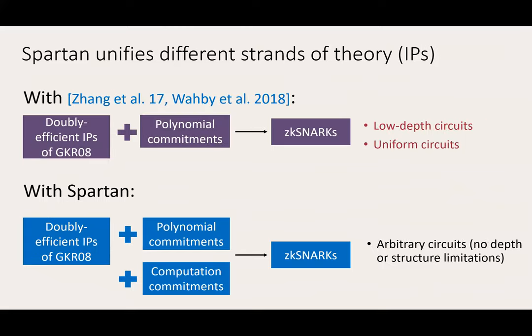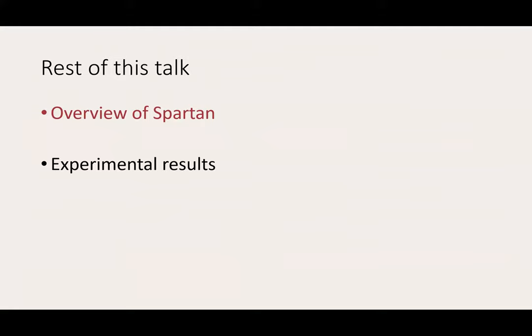Finally, SPARTAN can also be seen as a way to compile the doubly efficient interactive proofs of GKR. Prior compilers result in ZK-SNARKs for low-depth uniform circuits, whereas SPARTAN produces ZK-SNARKs for arbitrary circuits without any depth or structure limitations. The rest of this talk is in two parts: first, I'll provide an overview of SPARTAN, and then I'll describe some experimental results.